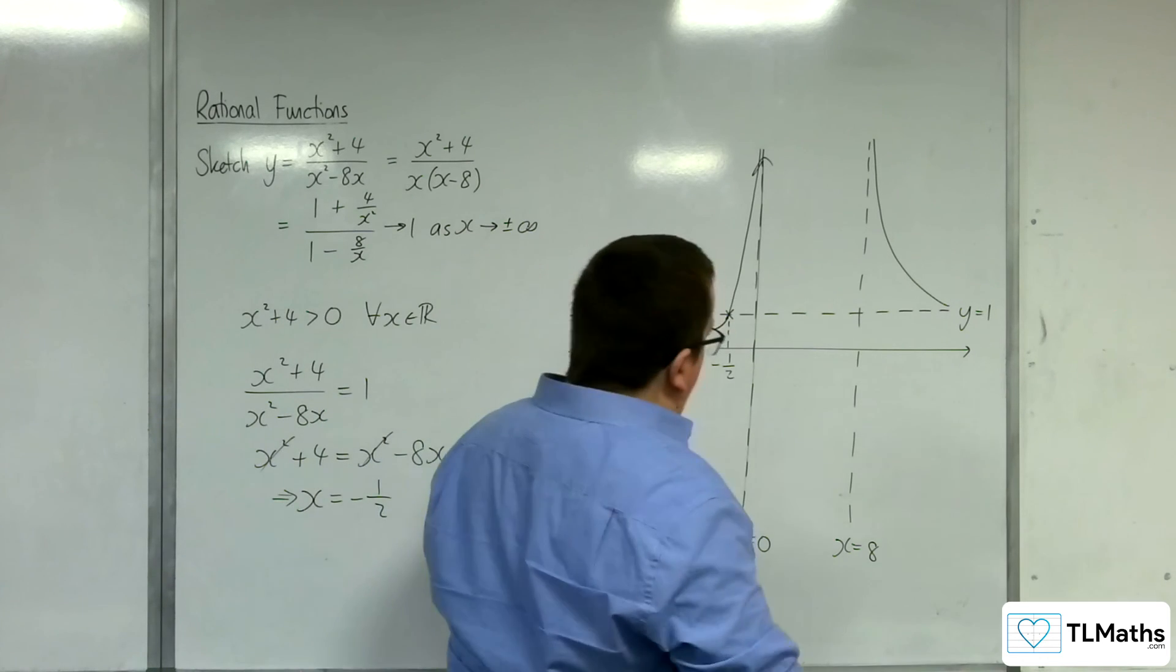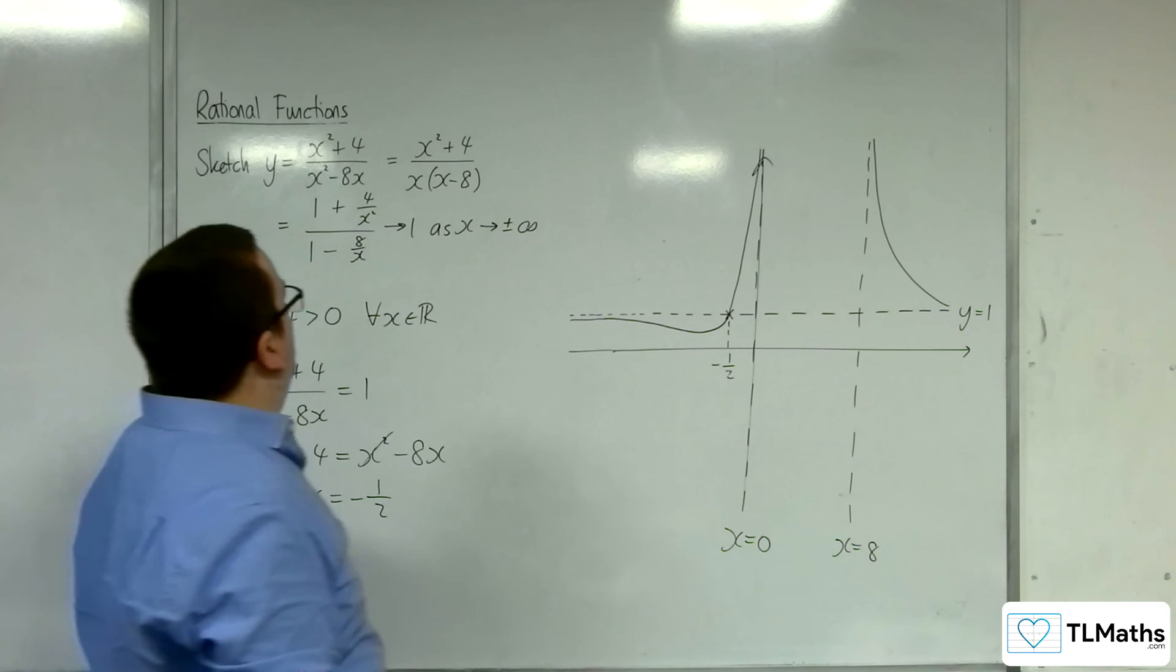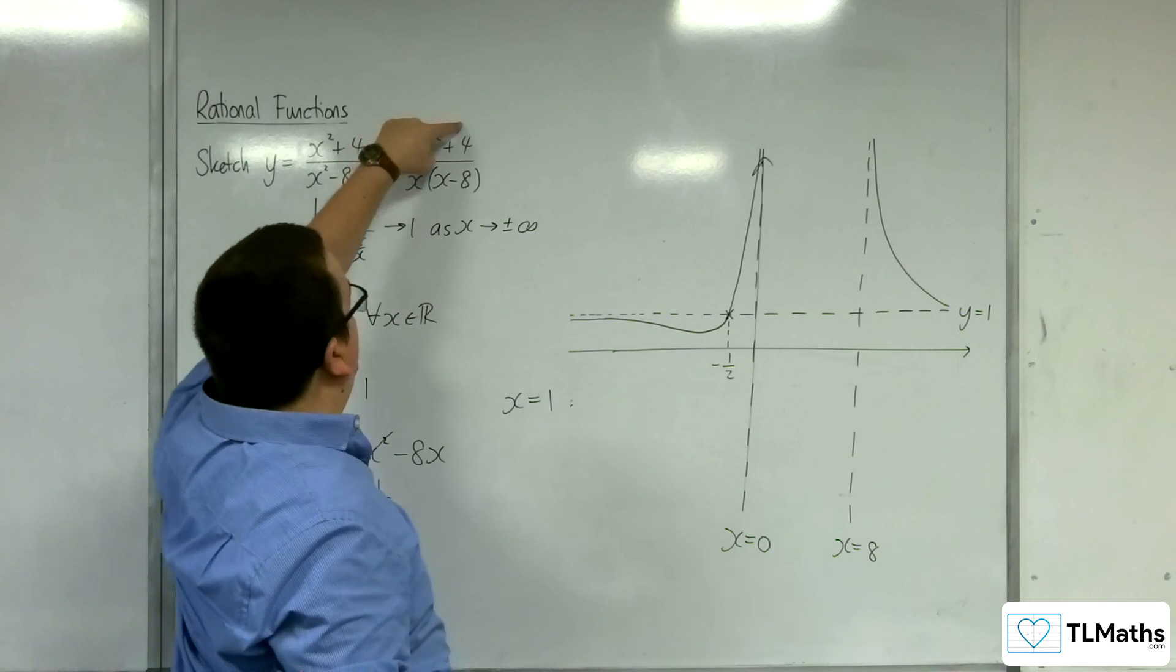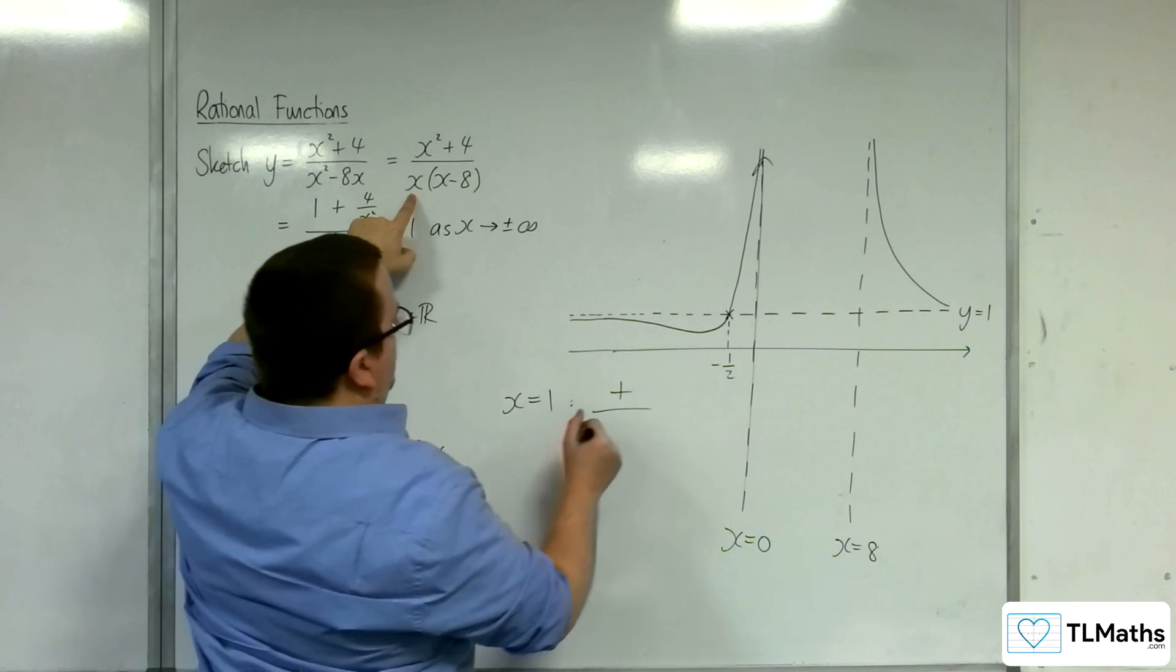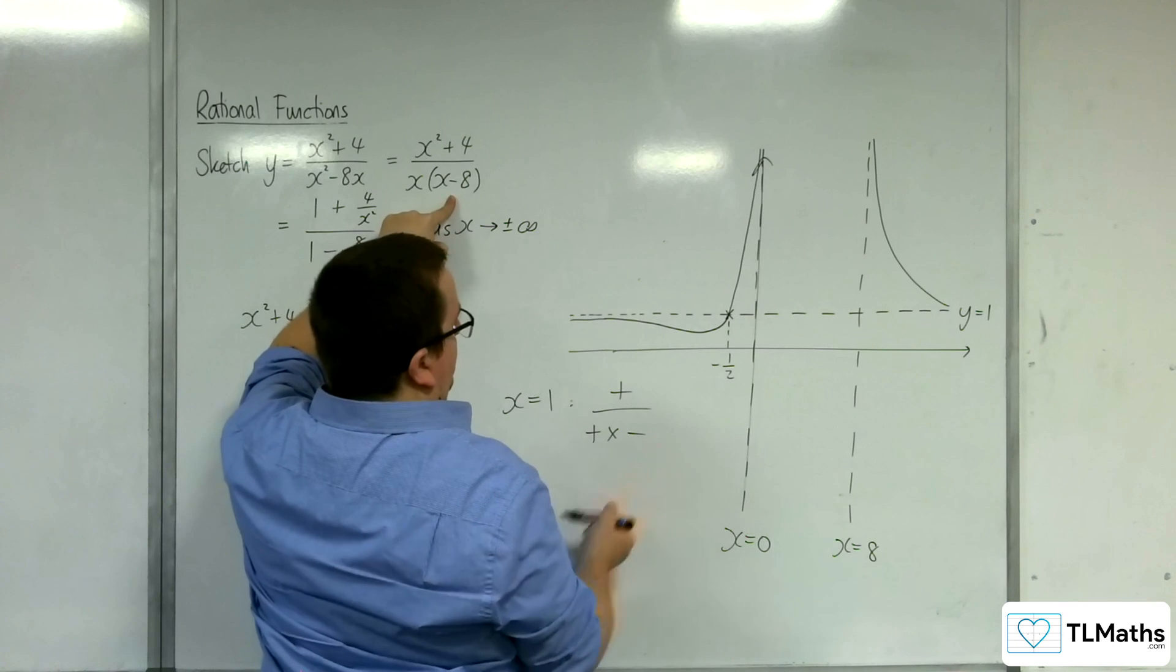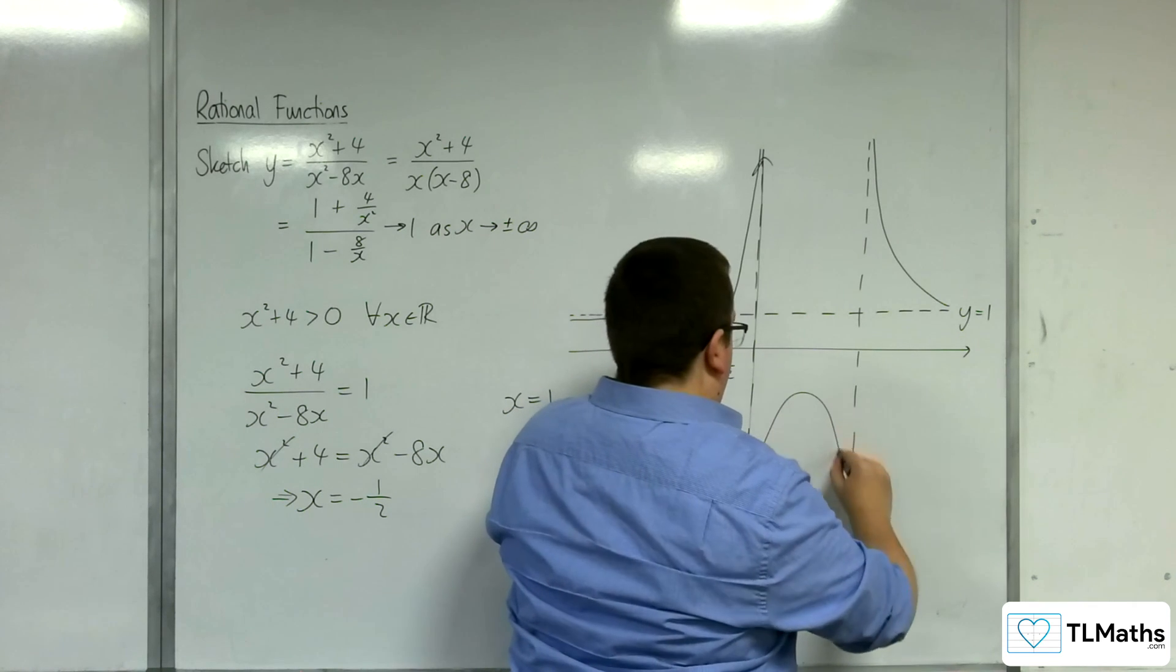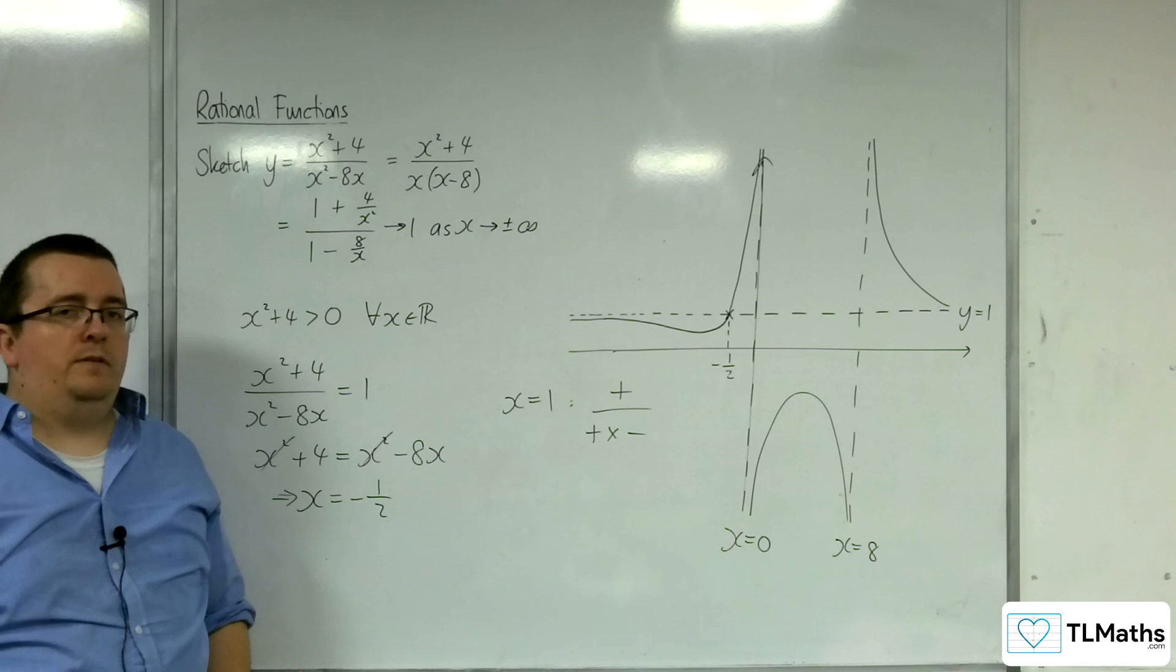How about in the middle? Let's try x = 1. When x = 1, the numerator is 1² + 4, which is positive. The denominator is 1 times (1 - 8), which is negative. So we've got a positive divided by a negative, which is negative. So we are down here, and this is what the curve must look like.